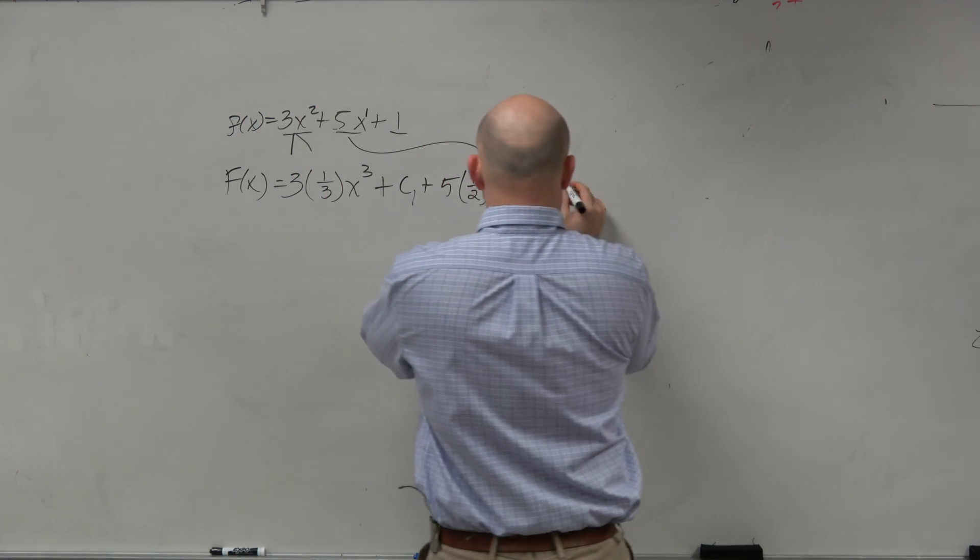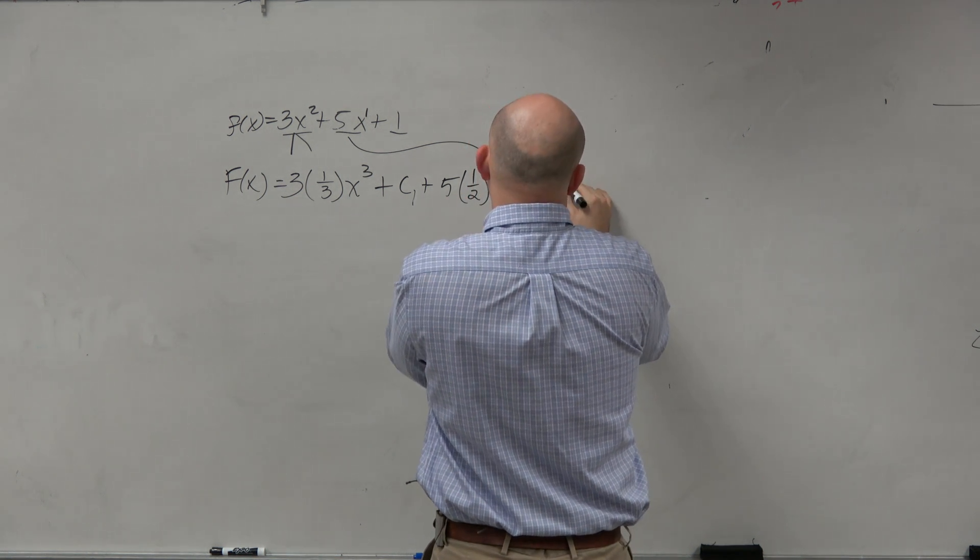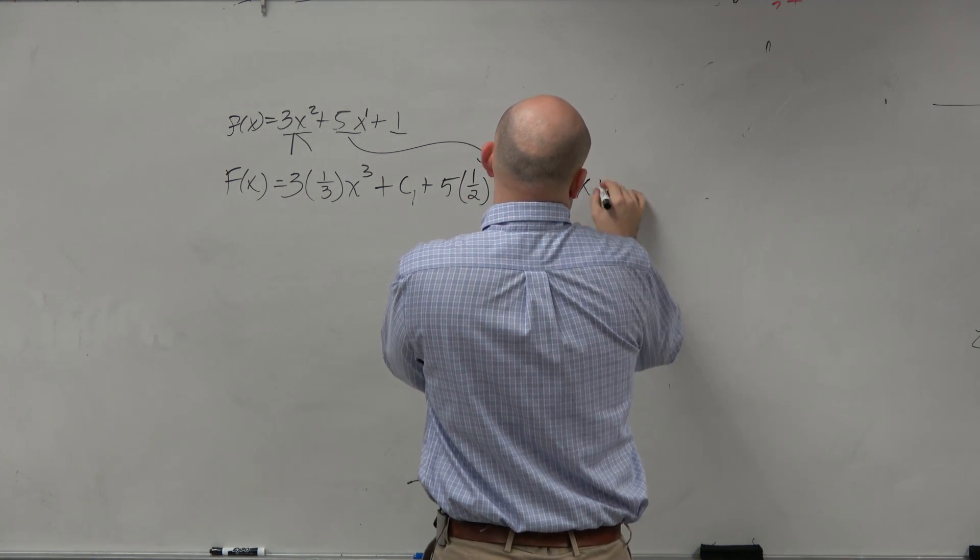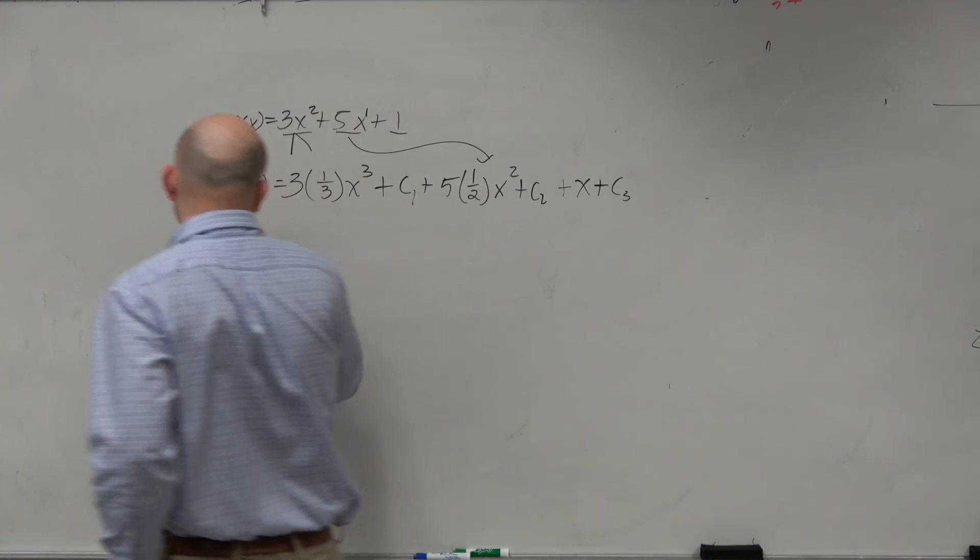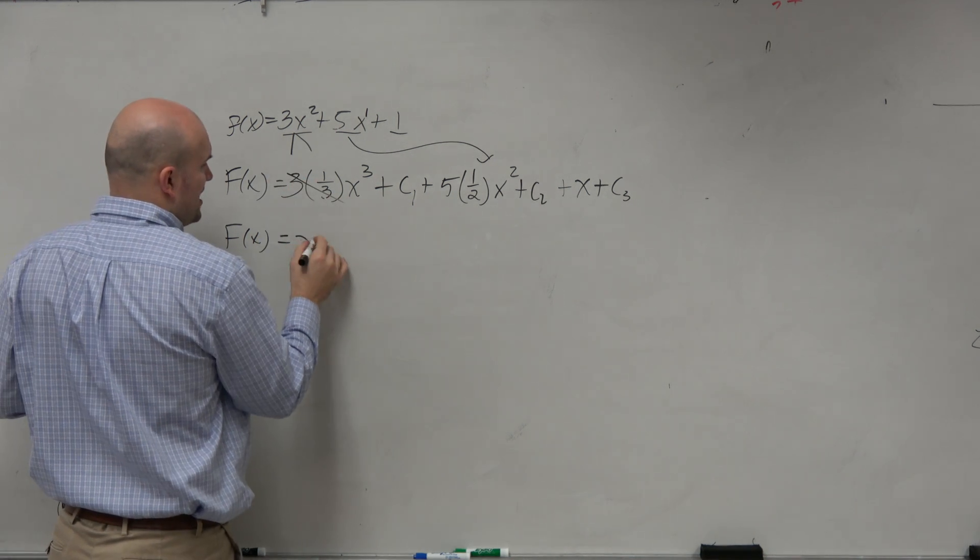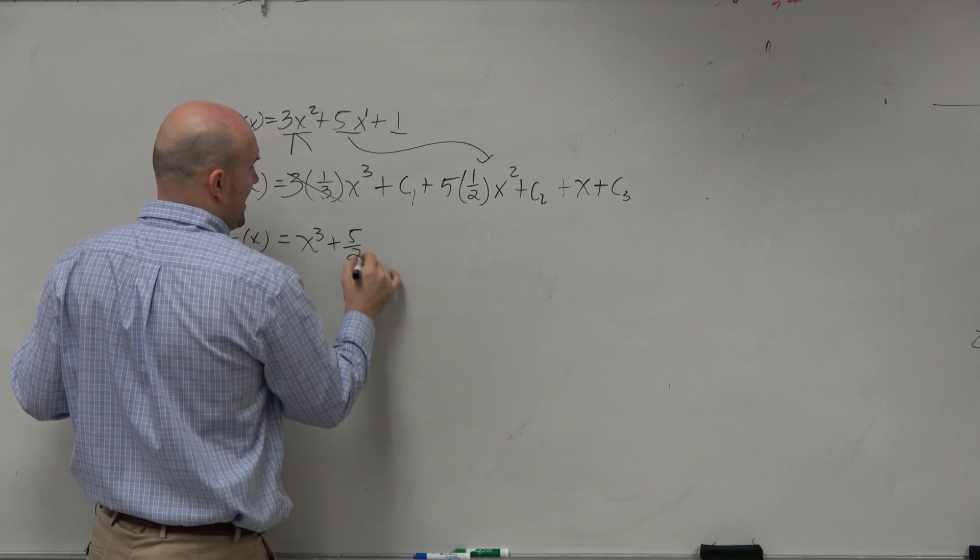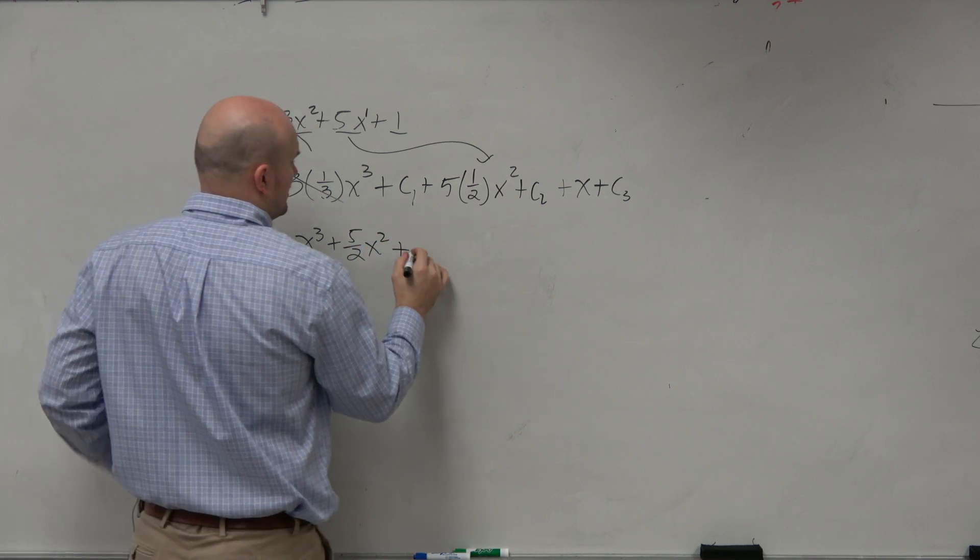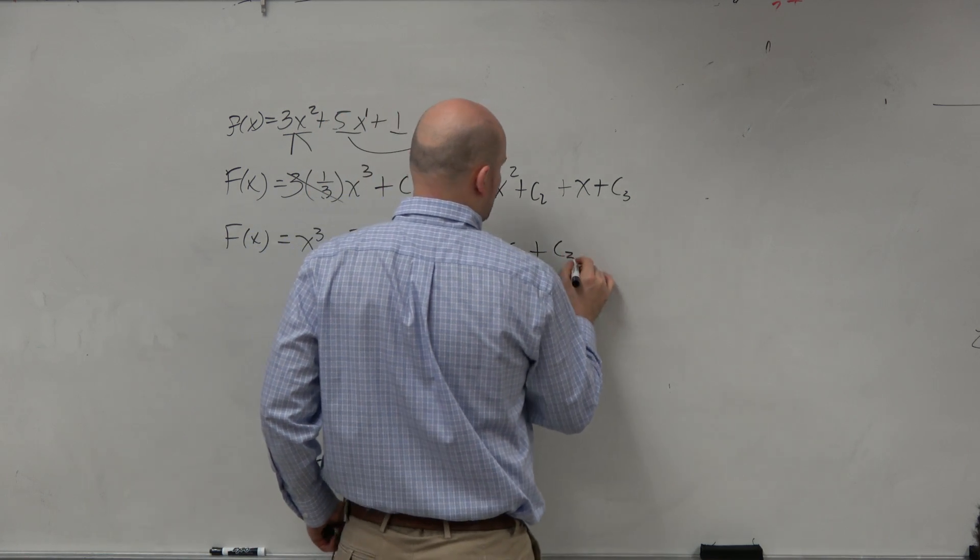And then we have our third one, which hopefully you guys can see is the derivative of what gives you 1. That's just going to be x plus c3. So if I kind of clean this up here, I have x cubed plus 5 halves x squared plus x plus c1 plus c2 plus c3.